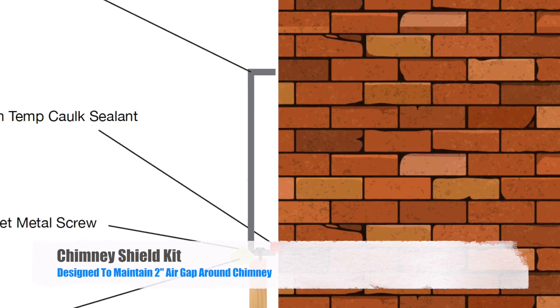The chimney shield is made to attach to existing framing around the chimney or a chimney with no framing. All bends are at 2 inches to maintain 2 inches of free air space around the chimney required by codes.